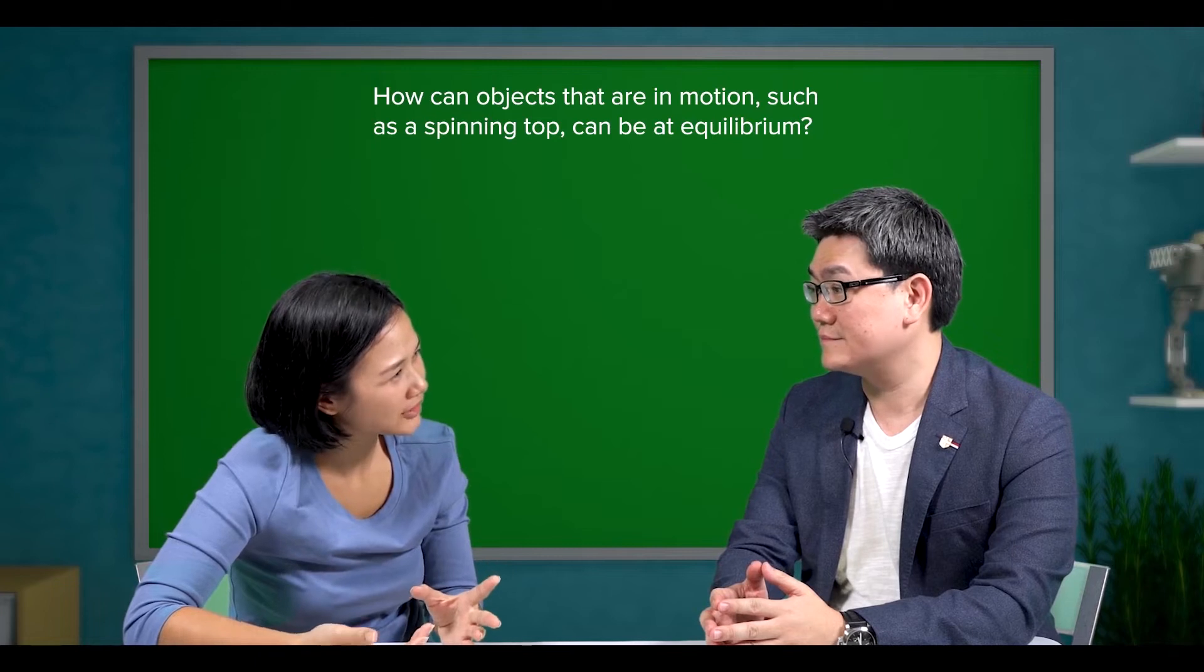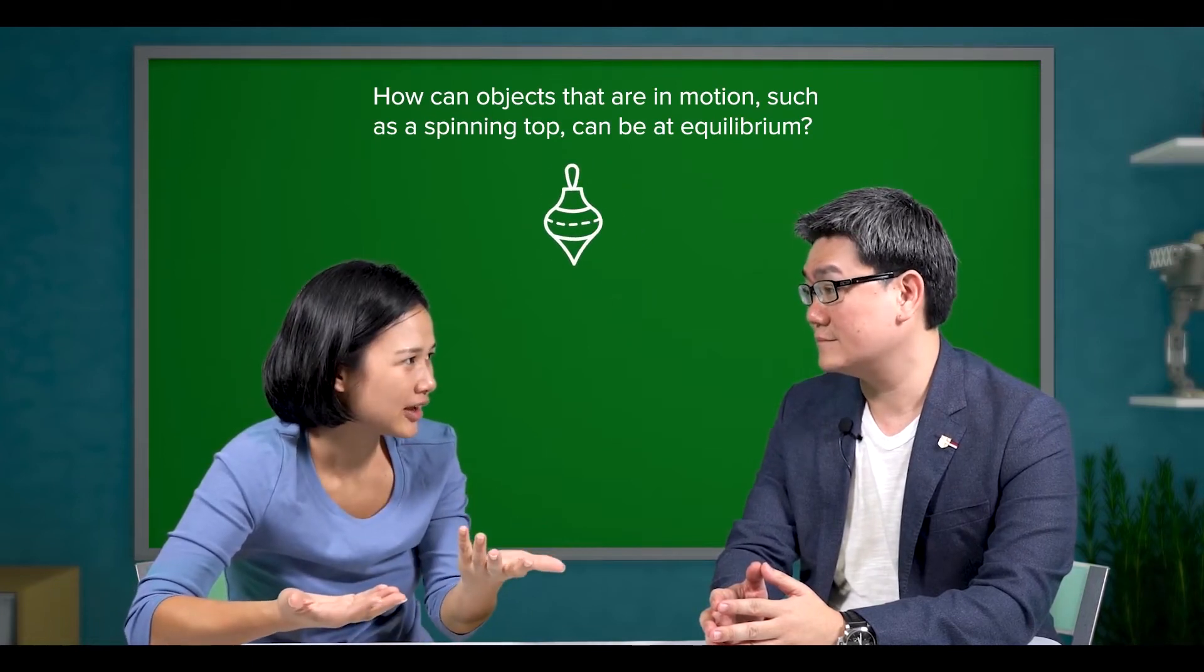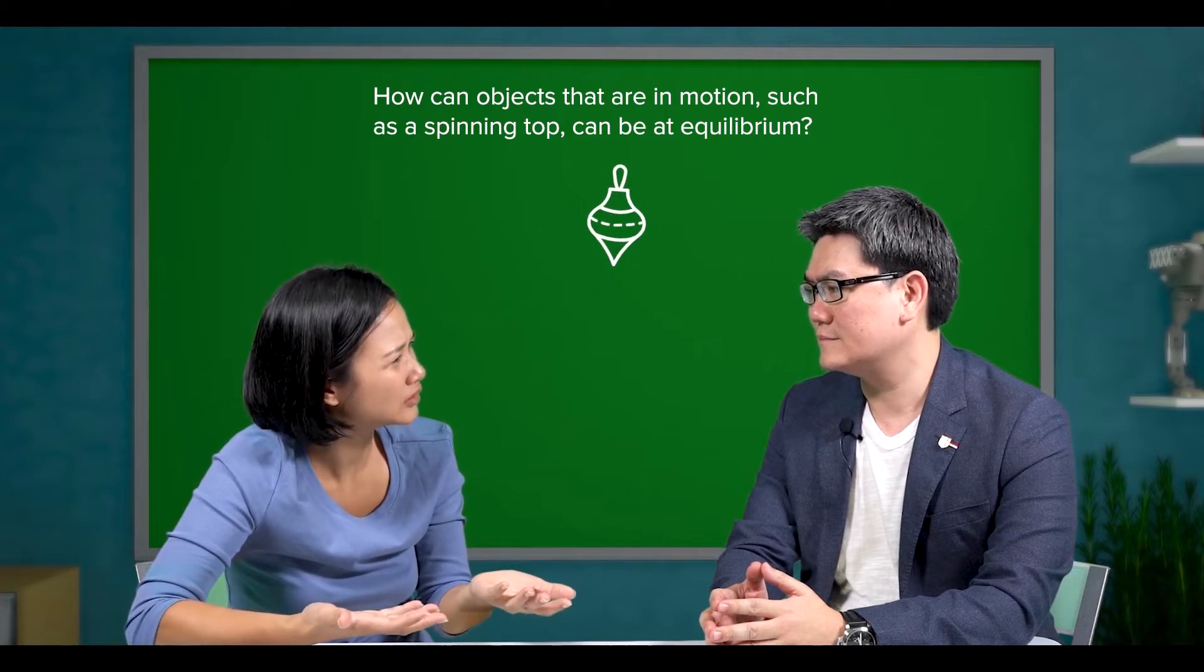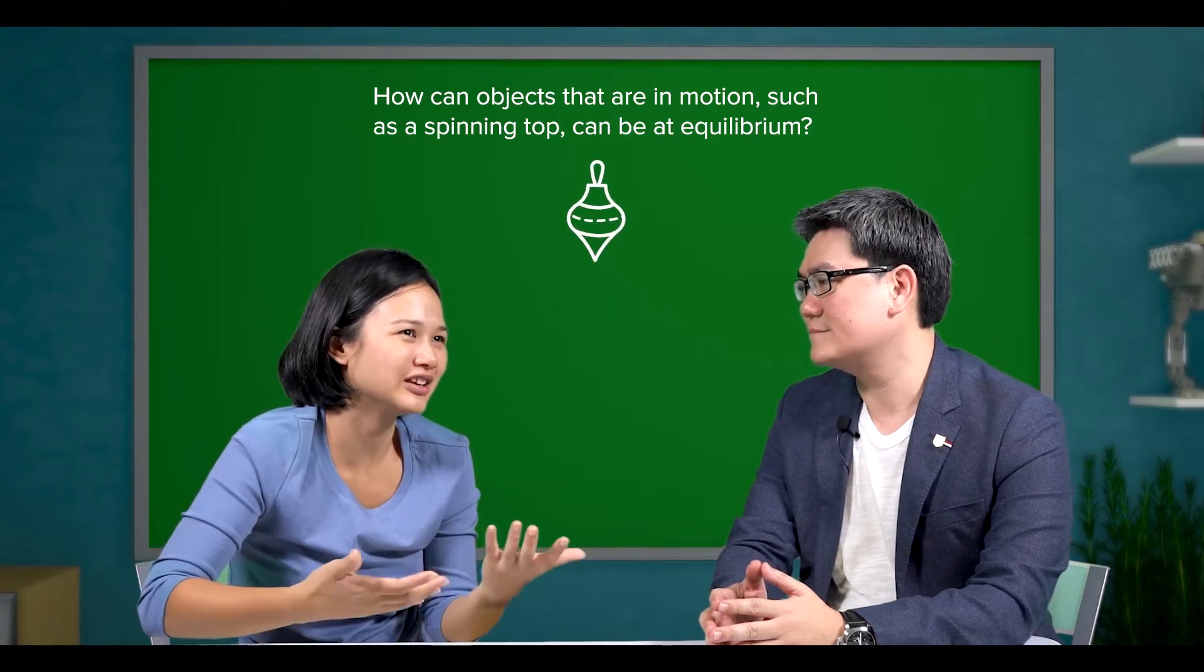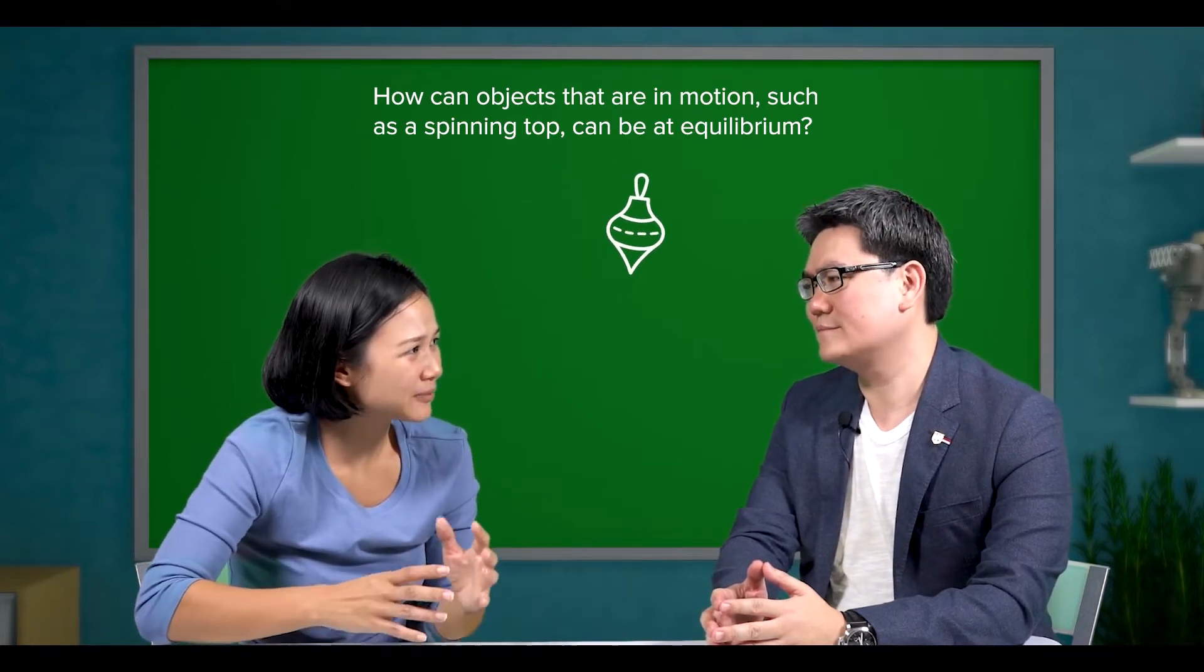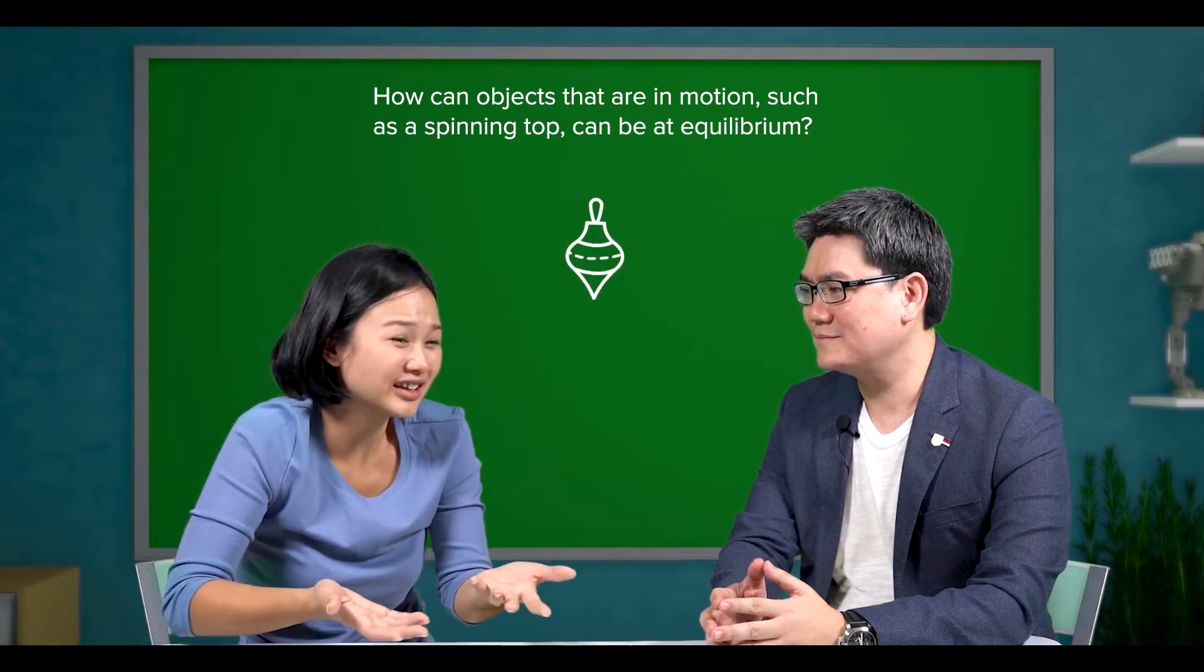Teacher, can you explain again how an object that is in motion, like a spinning top in the question, be at equilibrium as well? I mean, it's quite straightforward to think of something not moving to be in equilibrium. But for something that is moving, it just seems odd to think of it as being in equilibrium.